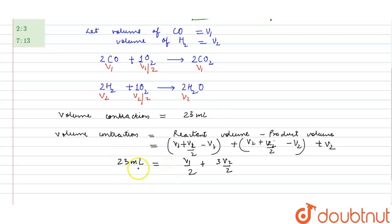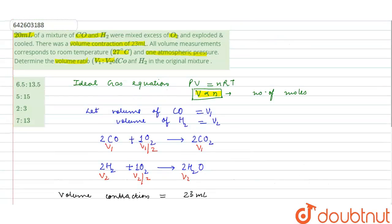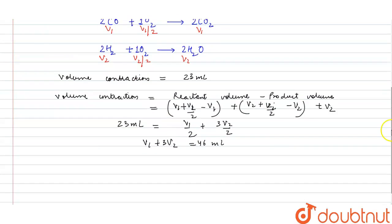From this, V1 + 3V2 = 46 ml. It is also given that the carbon monoxide and hydrogen mixture is 20 ml total, so V1 + V2 = 20 ml.